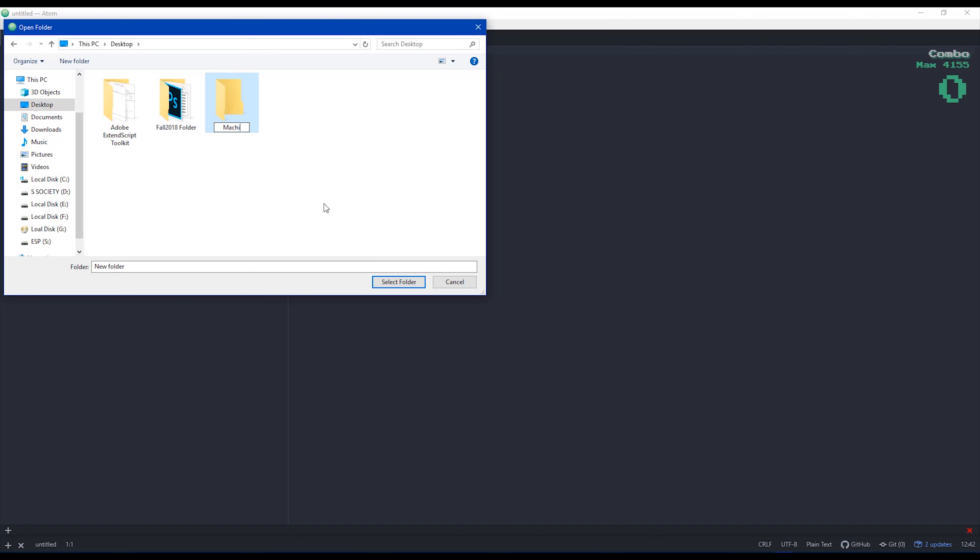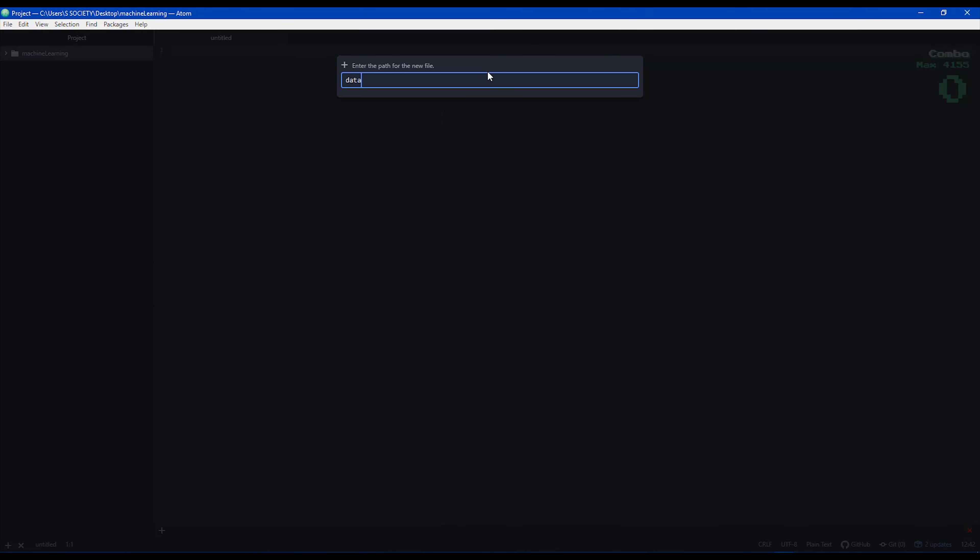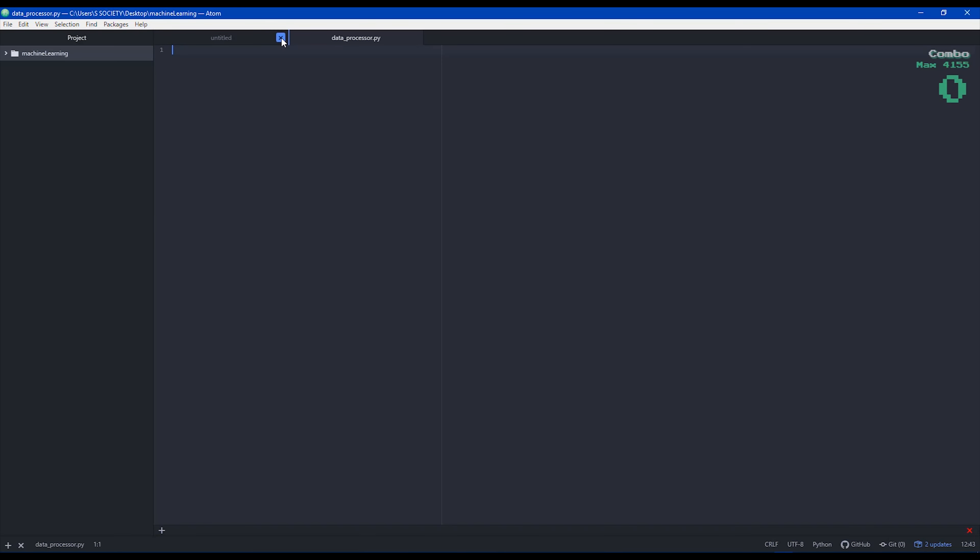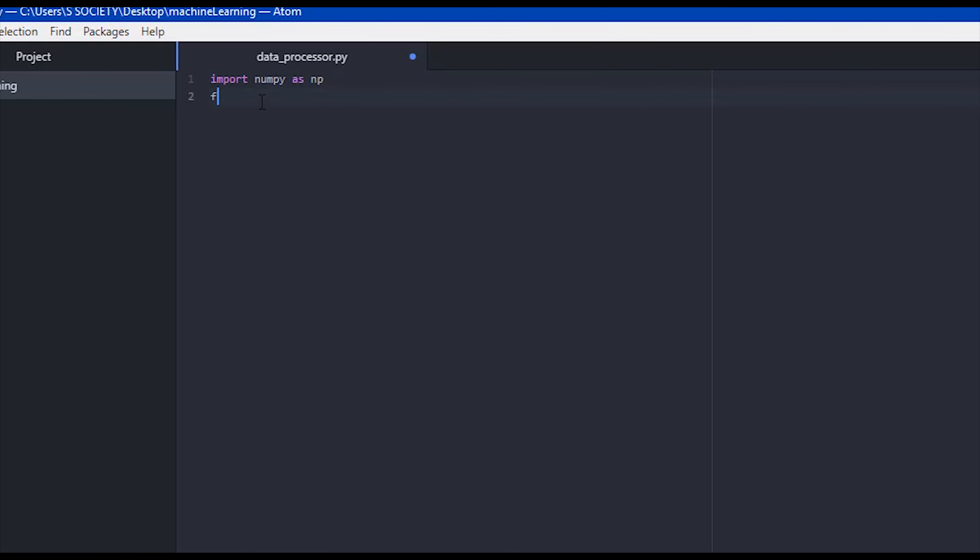I will create a new folder and name it machine learning. Select the folder, right click and create a new python file with the name. Choose any name you like. Import NumPy as np. Since we're using sklearn, we're going to import preprocessing. We can define some sample data to work with.